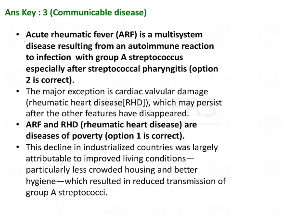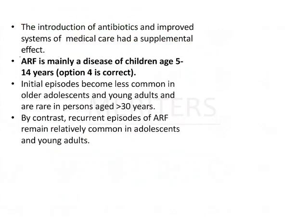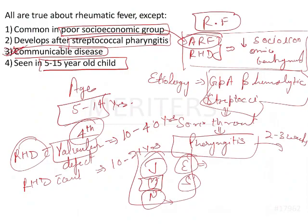To summarize: acute rheumatic fever is a multi-system disease resulting from an autoimmune reaction to infection with Group A streptococcus, especially after streptococcal pharyngitis. ARF and rheumatic heart disease are diseases of poverty. ARF is mainly a disease of children aged five to fourteen years. Coming back to the question, the exception is communicable disease.